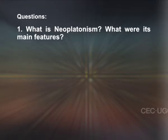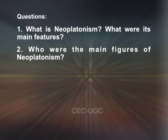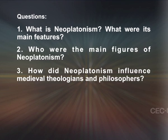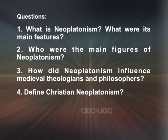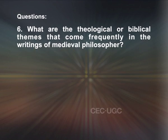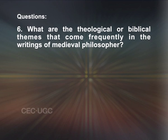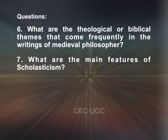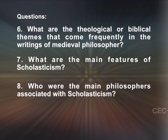Now you can try to answer the following questions. What is Neoplatonism and what were its main features? Who were the main figures of Neoplatonism? How did Neoplatonism influence medieval theologians and philosophers? Define Christian Neoplatonism. What were the three main characteristics in the writings of early medieval philosophers? What are the theological or biblical themes that come frequently in the writings of medieval philosophers? What are the main features of scholasticism? Who were the main philosophers associated with scholasticism?